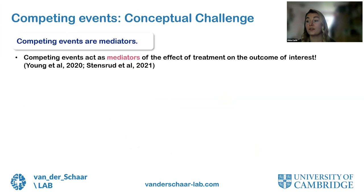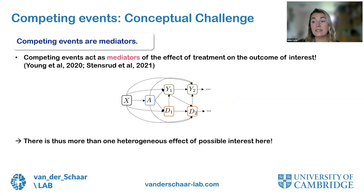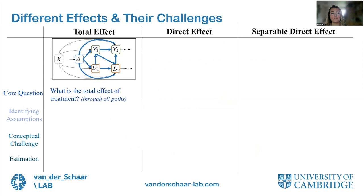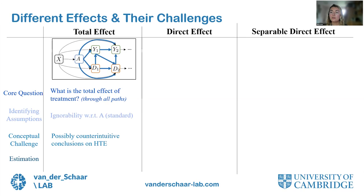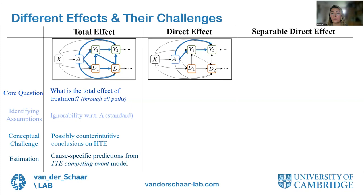This shows that treatment effect estimation in a competing event setting is actually quite difficult, because competing events are mediators of the effect of treatments on the outcome. The competing events D lie on the path from treatment to outcome. There is more than one effect of possible interest. The total effect answers: what is the total effect of treatment through all paths including those going through competing events? This requires only ignorability with respect to the treatment itself.